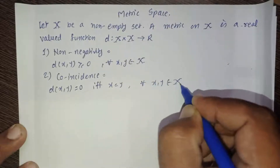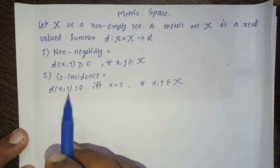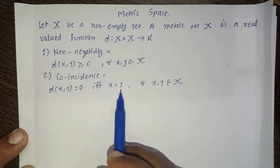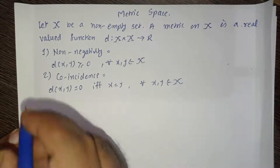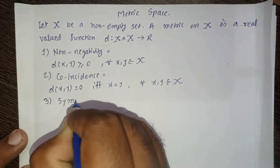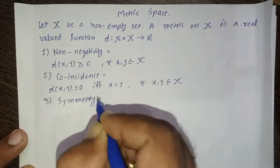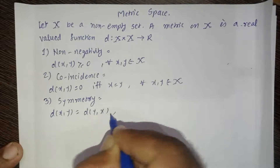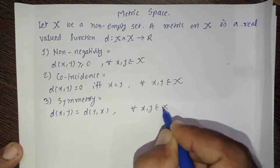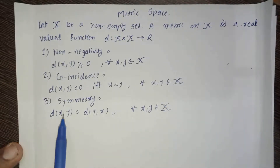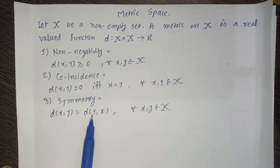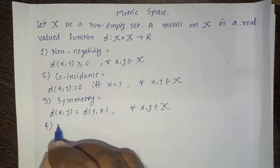That is, the distance between two points is 0 if and only if the two points are coincident. The third property is symmetry: D of XY is equal to D of YX for all X, Y belonging to X. That is, the distance from point X to point Y is the same as the distance from point Y to point X.